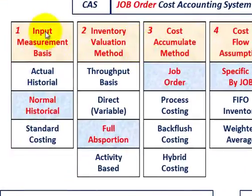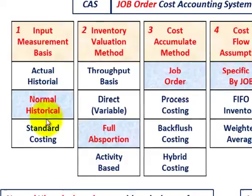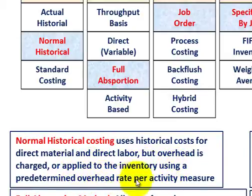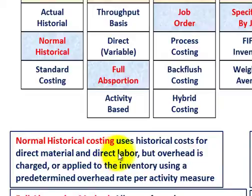For our example, we're going to use normal historical costing for the input measurement basis. With normal historical costing, you use historical costs for direct material and direct labor, but overhead is charged or applied to inventory using a predetermined overhead rate per activity measure. When we're talking about historical, we're really talking about the costs accumulated for the year. So for direct material and direct labor we use actual costs, but for applying overhead, we charge it off at a predetermined overhead rate for whatever activity we're looking at.